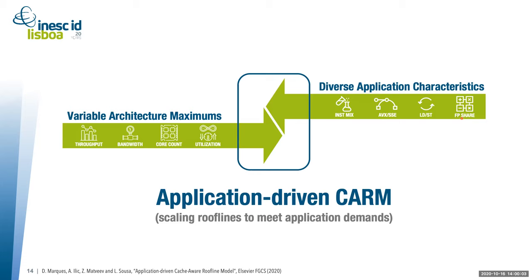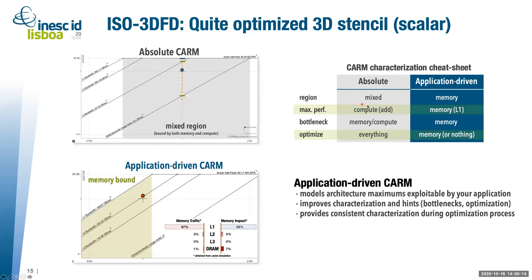So we tried to derive an application-driven CARM (cache-aware roofline model), which scales the roofs to match real application demands. To demonstrate this, we used ISO 3DFD, a well-optimized 3D stencil in its scalar implementation. We plotted it in both the absolute CARM — showing architecture maximums — and our application-driven CARM to compare the characterizations.